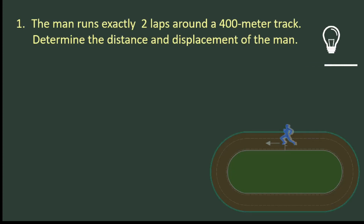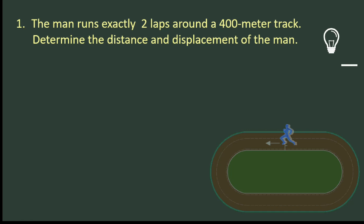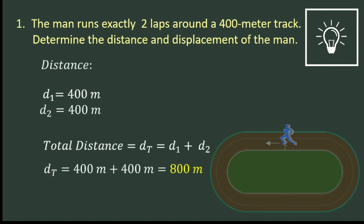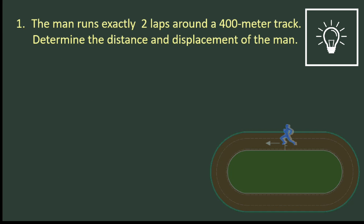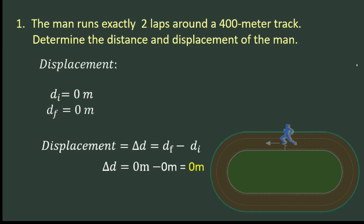Let us check your understanding of the difference between distance and displacement. The man runs exactly two laps around a 400-meter track. The distance traveled by the man for completing two laps is 400 meters plus 400 meters, equal to 800 meters. The position where the man started running is the same position where he ended on the track. Thus, the displacement of the man is 0.